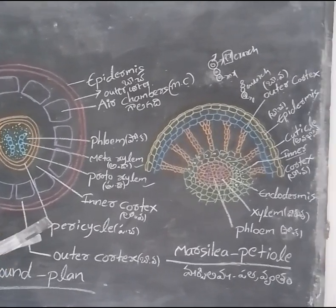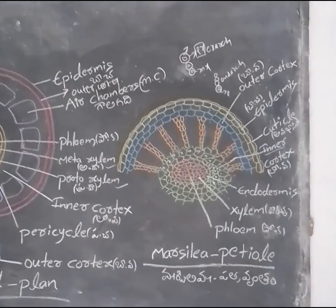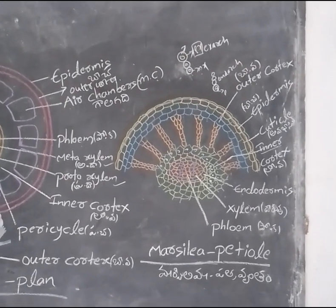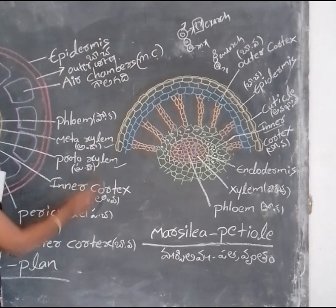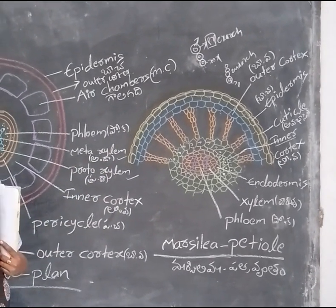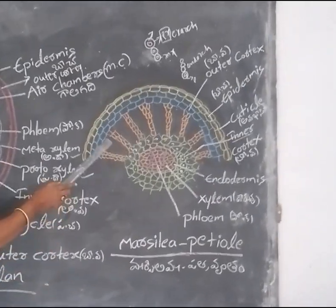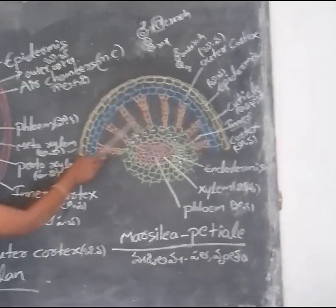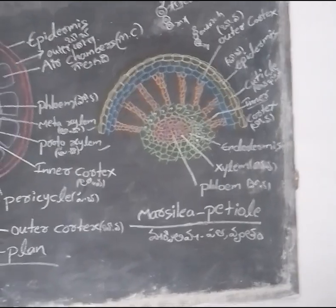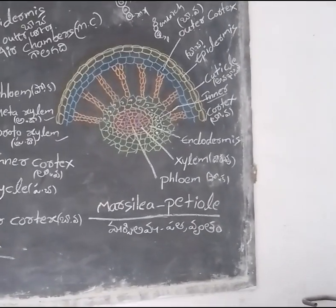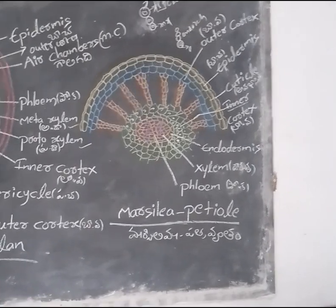This is the outermost layer. This is the Cortex — the outermost layer is called outer Cortex. This outer Cortex is made up of aerenchyma. Large aerenchyma are present in this plant. These air chambers are present — this is the hydrophytic character.